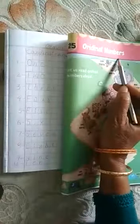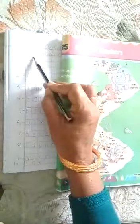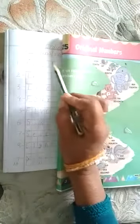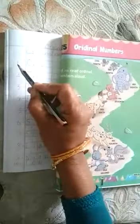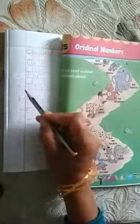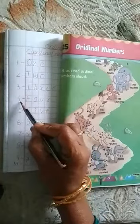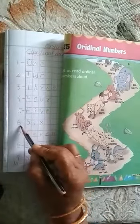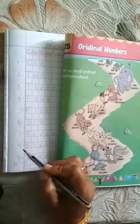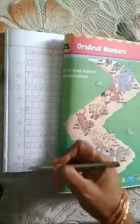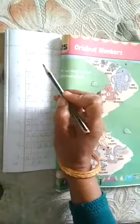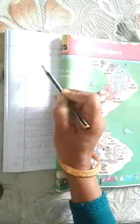Now we will learn cardinal numbers and ordinal numbers. Cardinal numbers means counting numbers, such as 1, 2, 3, 4, 5, 6, 7, 8, 9 and 10. In word form: O-N-E, 1.